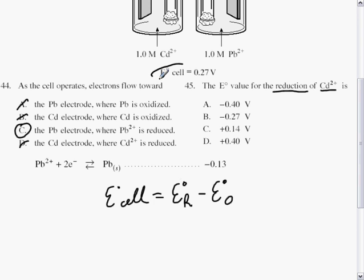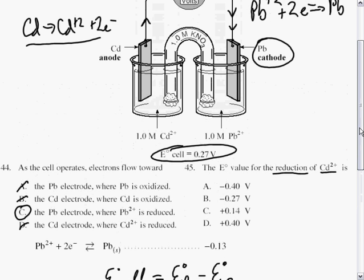E° of the cell is equal to E° of the reduction minus E° of the oxidation. Well, we know the E° of the cell at 0.27. And lead is being reduced, so the reduction is minus 0.13.